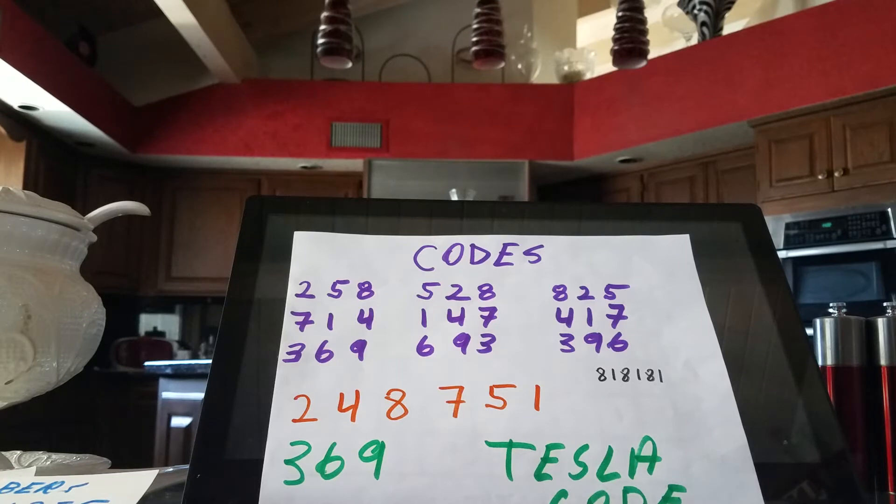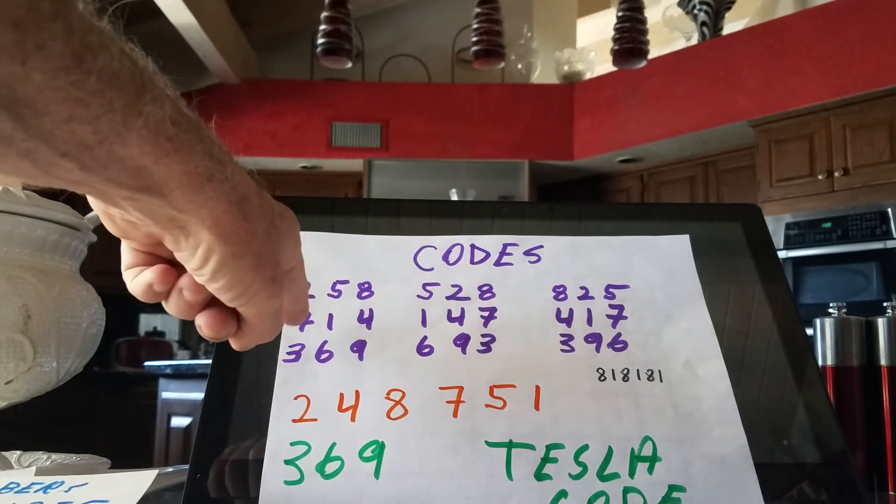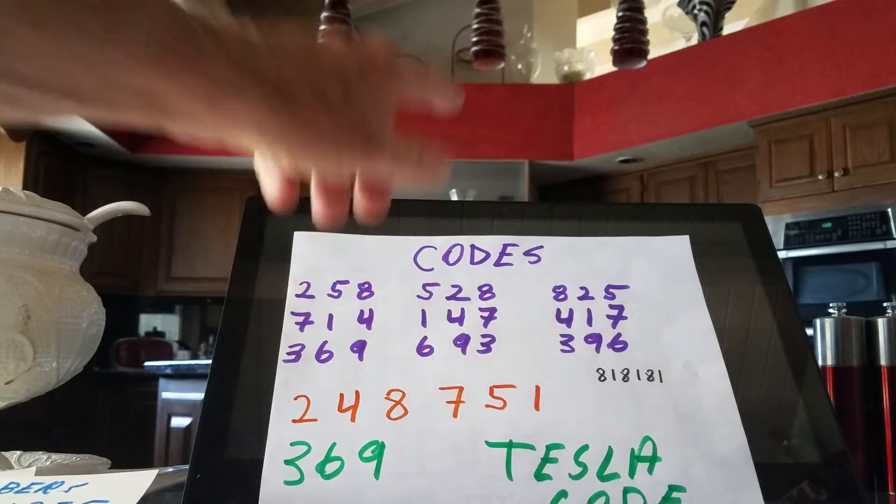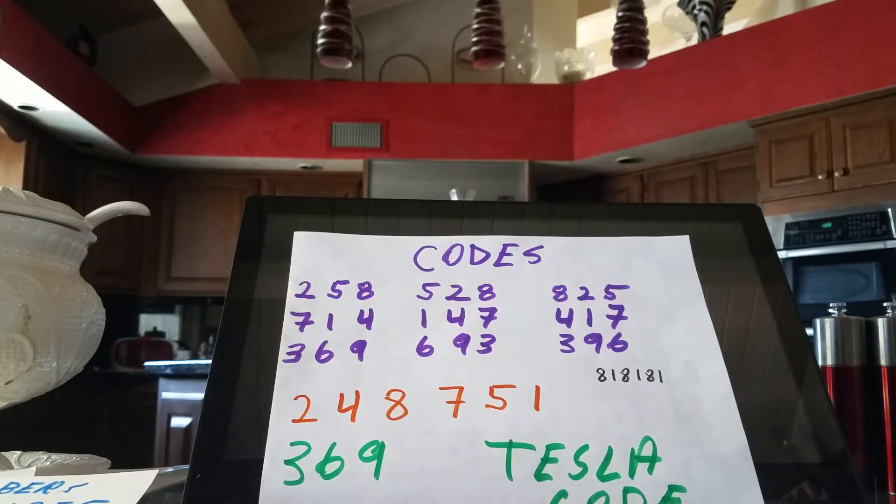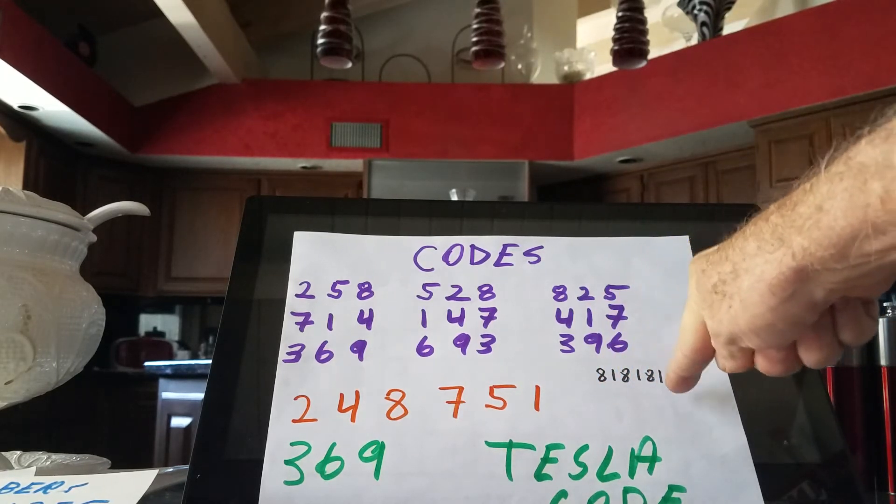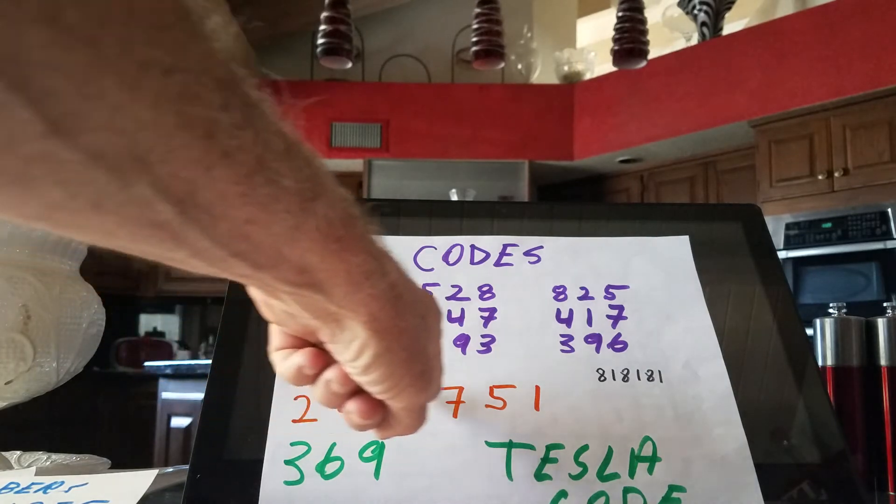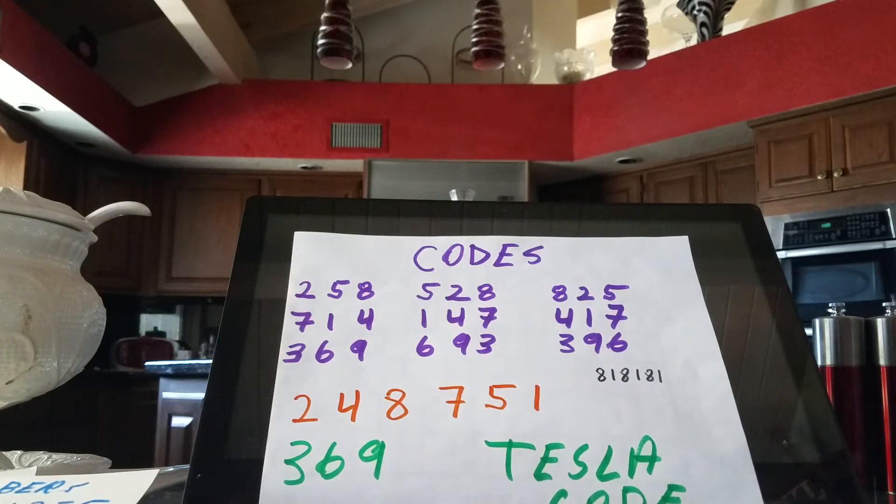We could call that code 2-4-8-7-5-1, we can call it 3-6-9, we can call it 7-1-4, we can call it 2-5-8. But in reality they're all the same number because the universe is very simple. It speaks a very simple language so we can understand it. I point out that 2-5-8 and 7-1-4 and 3-6-9 are the same number. If we go backwards along the number line and cross zero, the 2-5-8 will turn into a 7-1-4, and the 1-4-7 will turn into a 2-5-8. If we multiply them against each other they're going to be transforming themselves into each other.